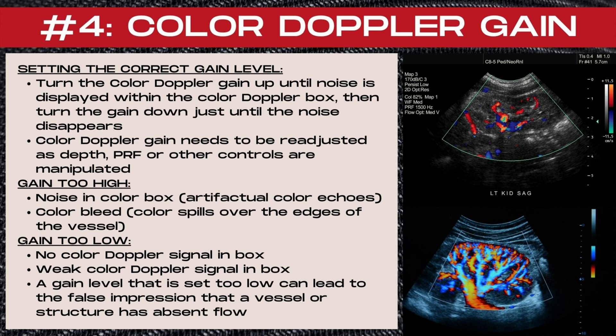The next step in our color Doppler optimization checklist is to optimize the color Doppler gain. Grayscale is not the only thing that has its own gain level — the color Doppler, spectral Doppler, and power Doppler controls also have their own gain controls. The color Doppler gain control amplifies the Doppler signals in the ultrasound machine. To set the correct color Doppler gain level, turn the gain up until noise is displayed within the color Doppler box — those little extra speckles of color — then turn the gain knob down just until the noise disappears. This is the optimal color Doppler gain level.